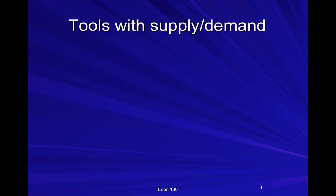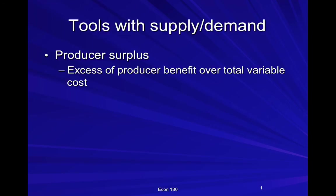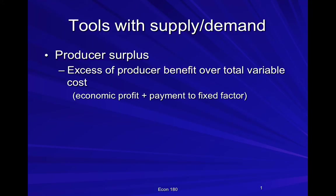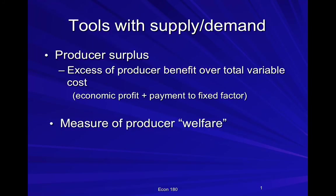To analyze the impact of various trade policies, we use producer surplus. That's defined as the difference between the producer benefit from participating in the market and the total variable cost. That's another way of saying economic profit plus any payments to fixed factors. This is going to be our basic measure of producer welfare under various circumstances.